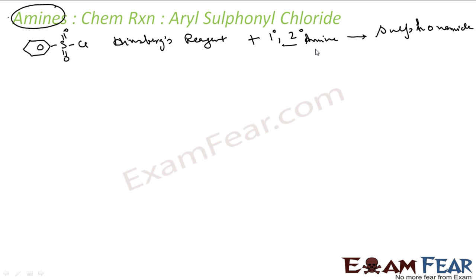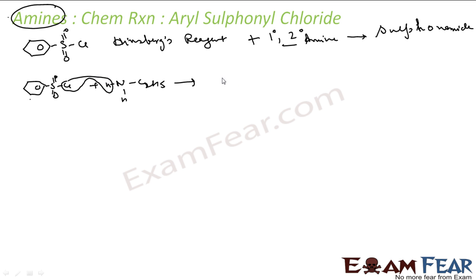Please note it will react only with primary and secondary amine, not with tertiary amine, because it needs some hydrogen to react. Let's start with the primary amine reaction. The benzene sulfonyl chloride reacts with primary amine — for example C2H5-NH2 — and what happens is the H and the Cl come out, giving N-H-C2H5 product with HCl leaving. This is called N-ethyl benzene sulfonamide.